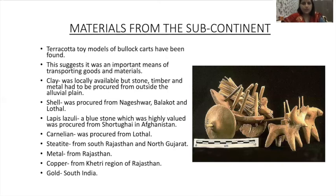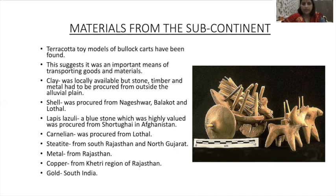Materials were procured in two ways: from within the subcontinent and from distant lands. Terracotta toy models of bullock carts suggest they were an important means of transporting goods. Clay was locally available, but stone, timber and metal had to be procured from outside the alluvial plain. Shell was procured from Nageshwar, Balakot and Lothal. Lapis lazuli, a blue stone highly valued, was procured from Shortugai in Afghanistan. Carnelian from Lothal, steatite from South Rajasthan and North Gujarat, metal from Rajasthan, copper from the Khetri region of Rajasthan, and gold from South India.